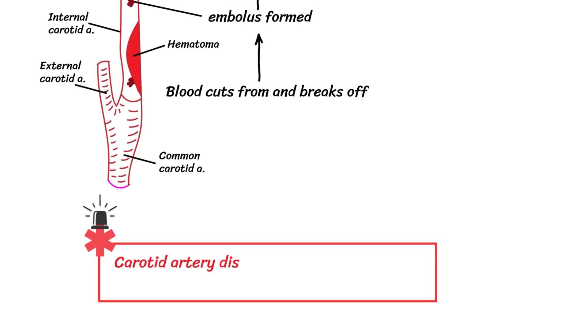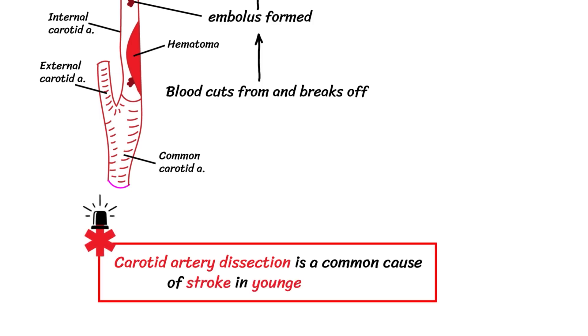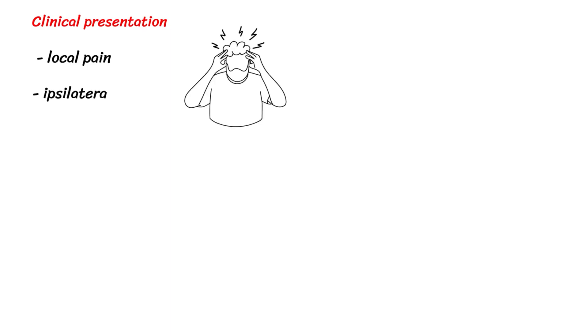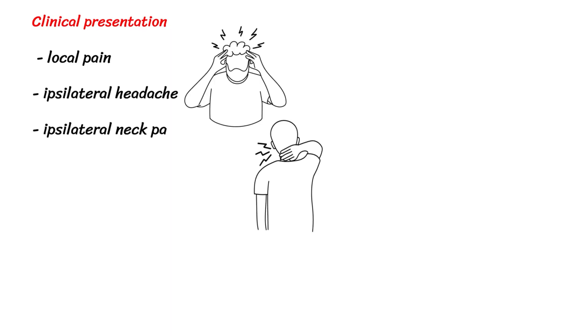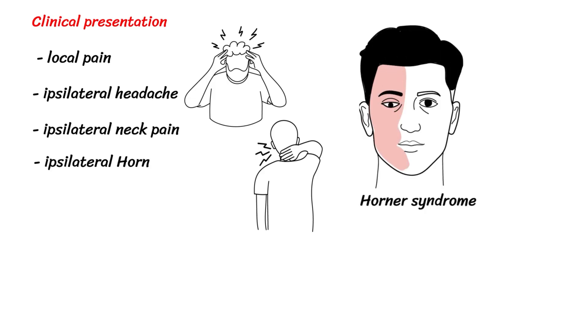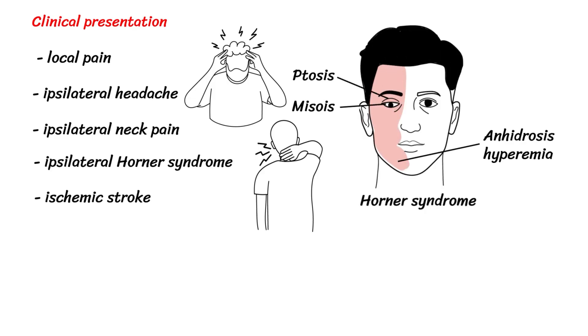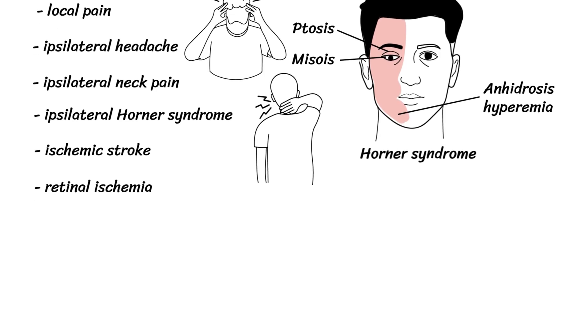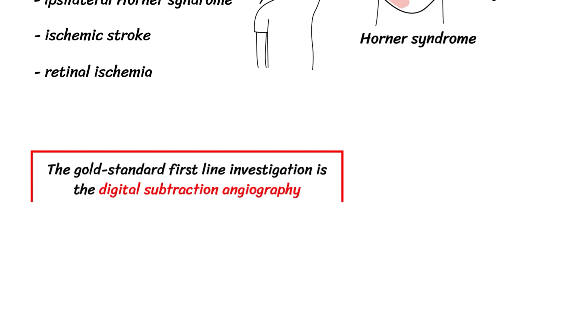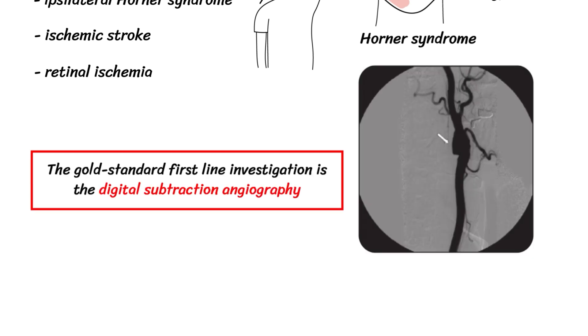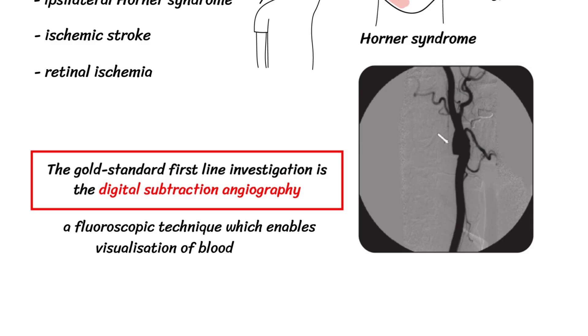Carotid artery dissection is a common cause of stroke in young patients. Classic presentation includes local pain to the area, an ipsilateral headache or neck pain, an ipsilateral Horner syndrome, ischemic stroke, and retinal ischemia. The current gold standard first-line investigation is digital subtraction angiography, a fluoroscopic technique which enables visualization of the blood vessels.